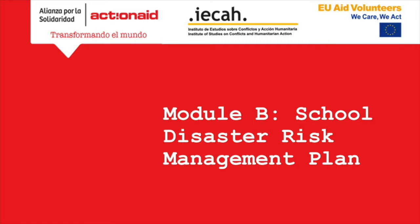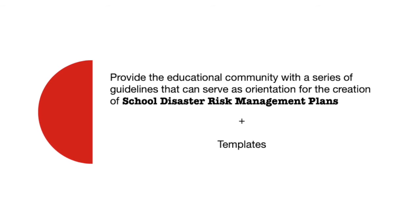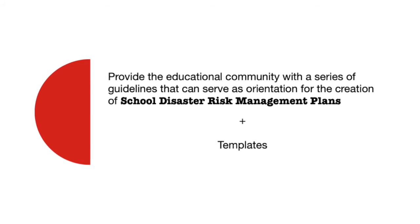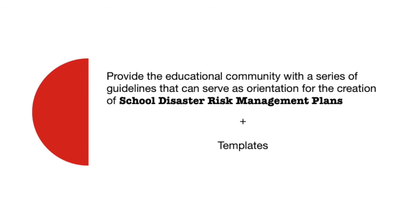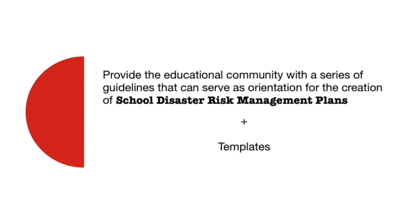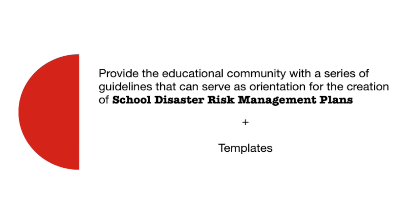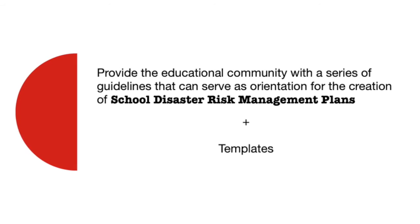Model B: School Disaster Risk Management Plan. This module is aimed at schools and educational institutions. Schools are particularly sensitive to risk, and it is therefore very important to work in schools. This model aims to provide the educational community with a set of guidelines to guide any educational institution or school in the creation of a school disaster risk management plan.